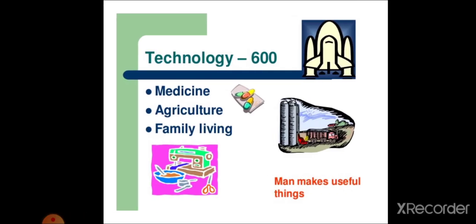Man makes useful things. Technology. Technology comes under 600. Medicines, agriculture, family living, all comes under this category.